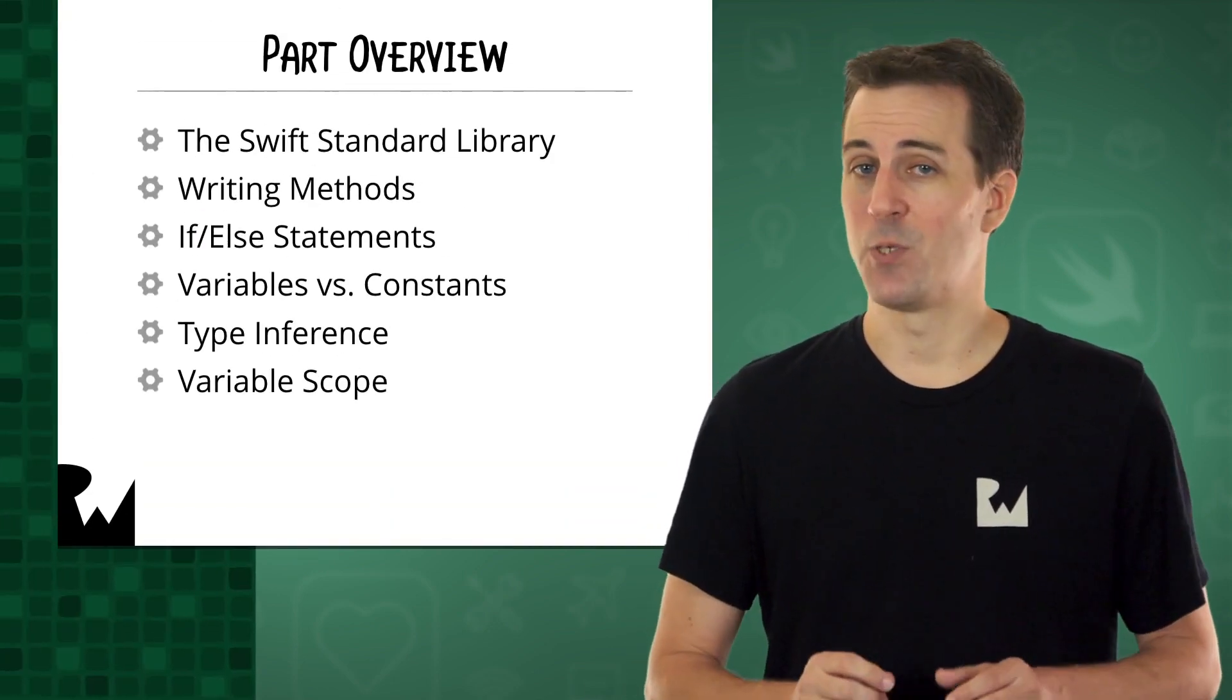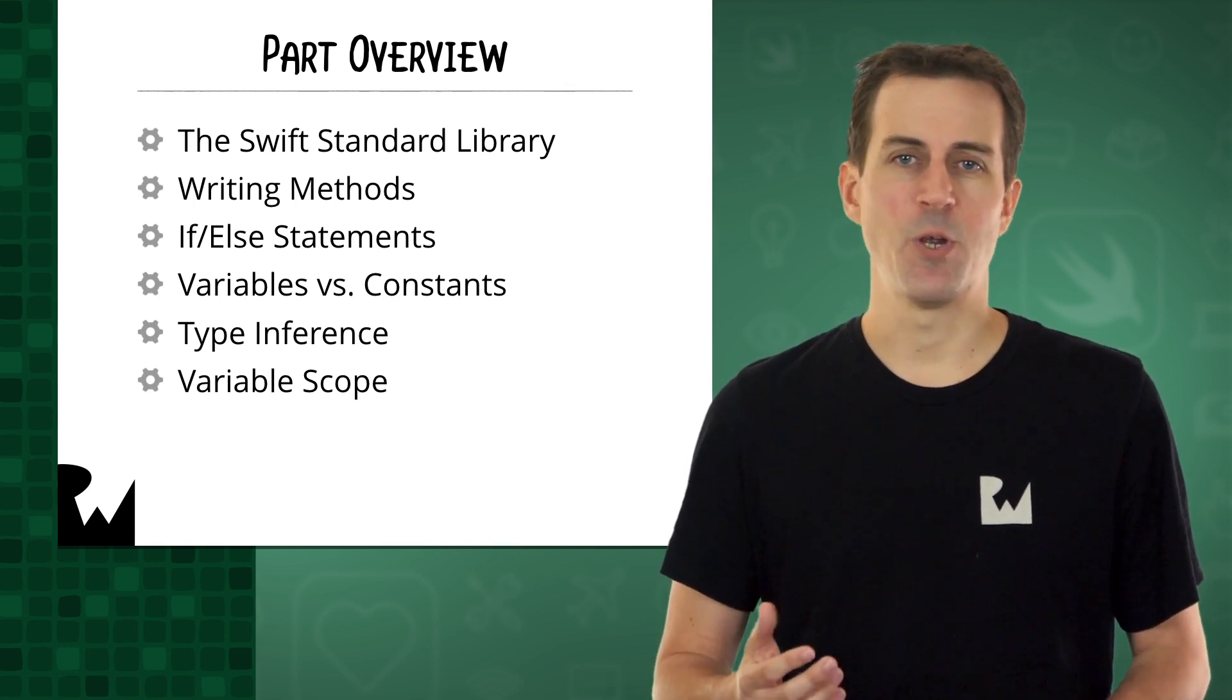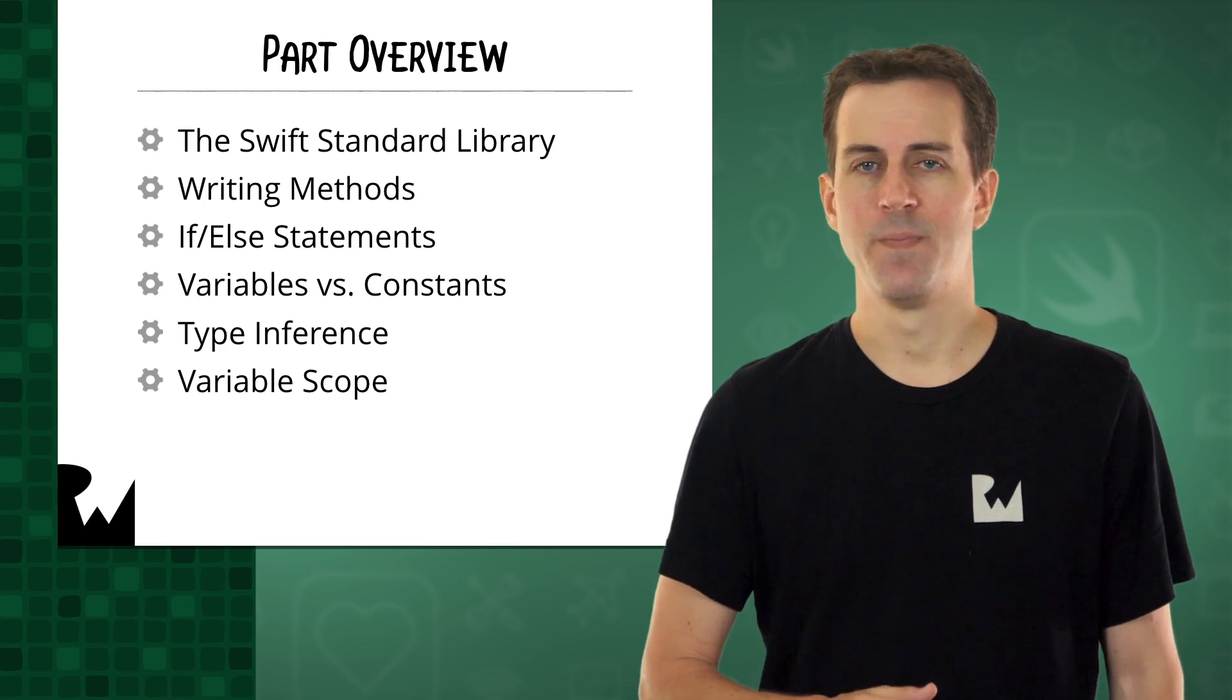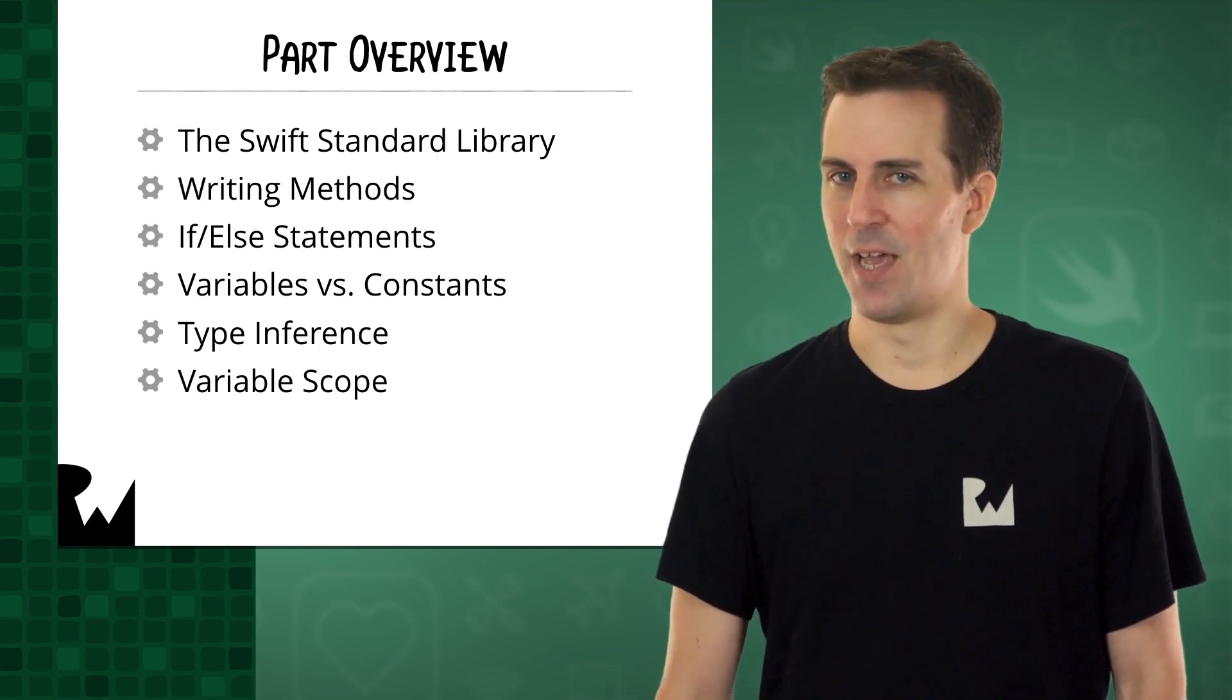You'll start off by taking a deeper look at the Swift Standard Library, which is a library of functions written by engineers at Apple that you can use in your Swift code. And you'll use it to generate a random target number in Bullseye.